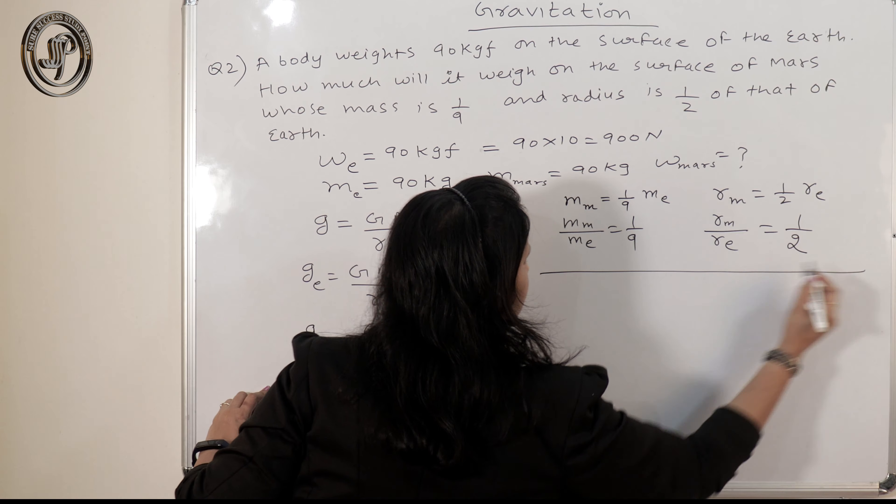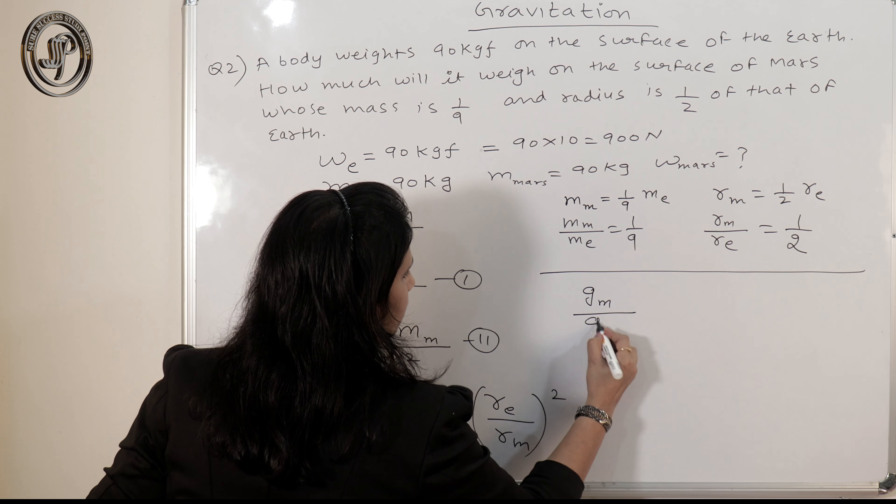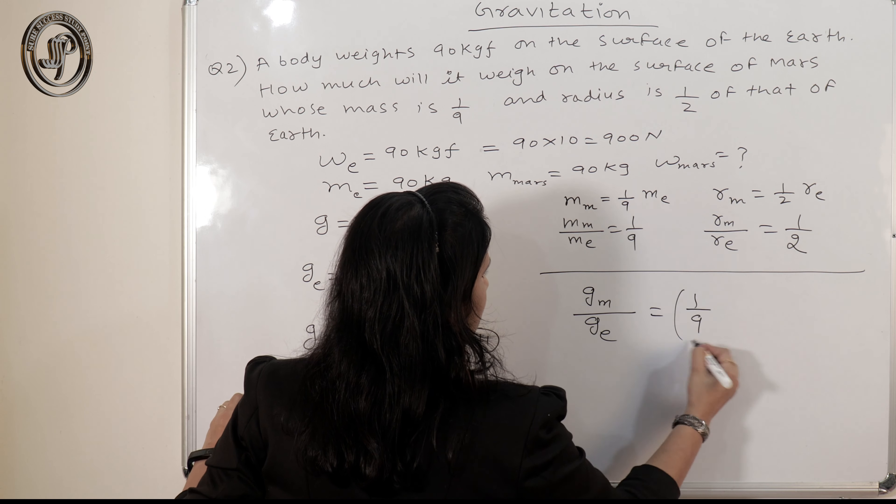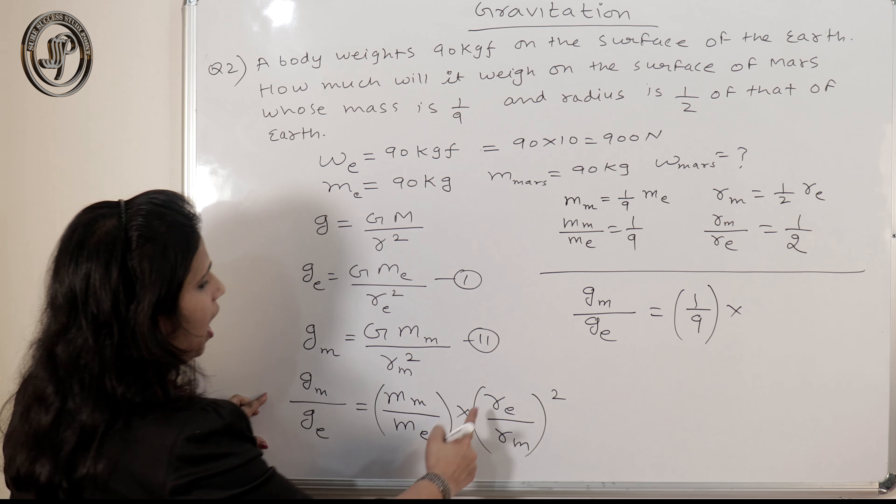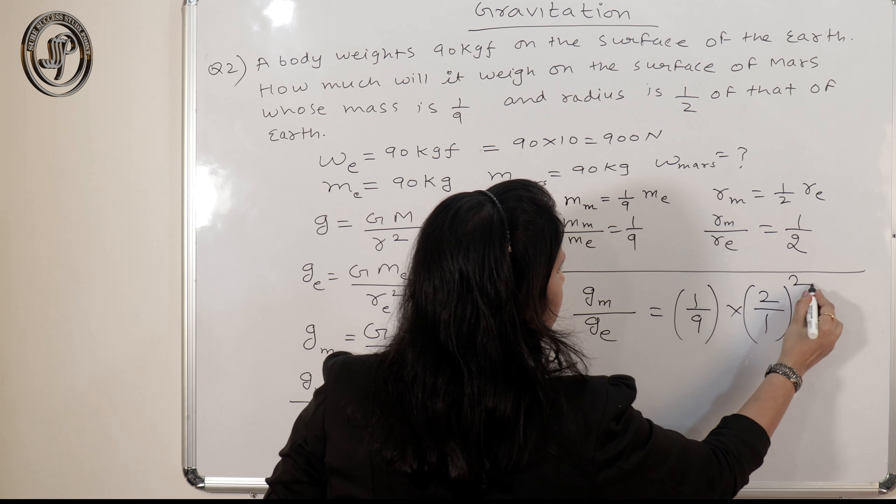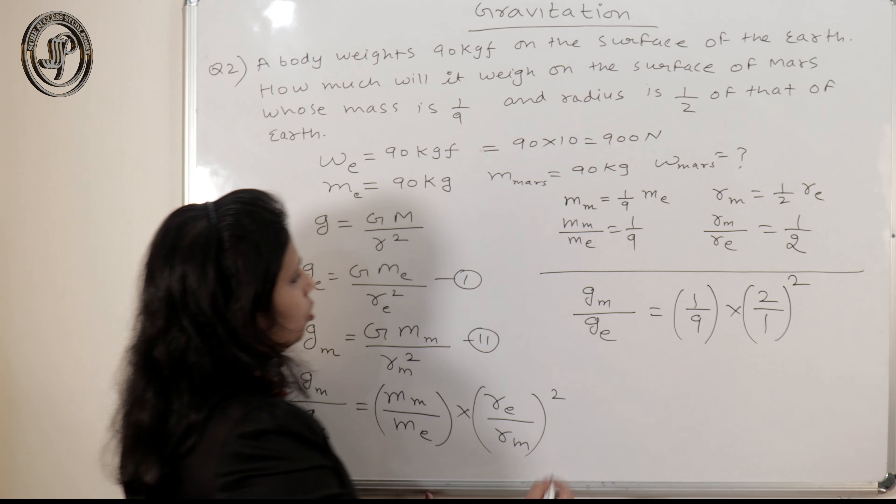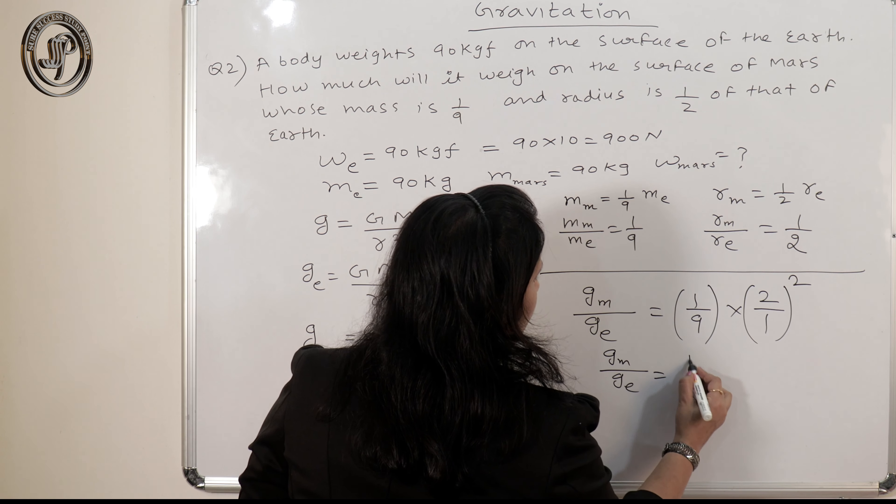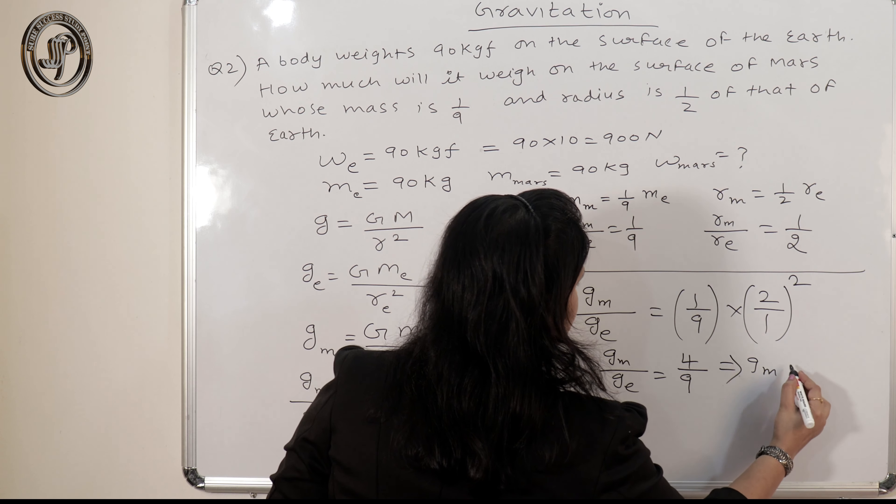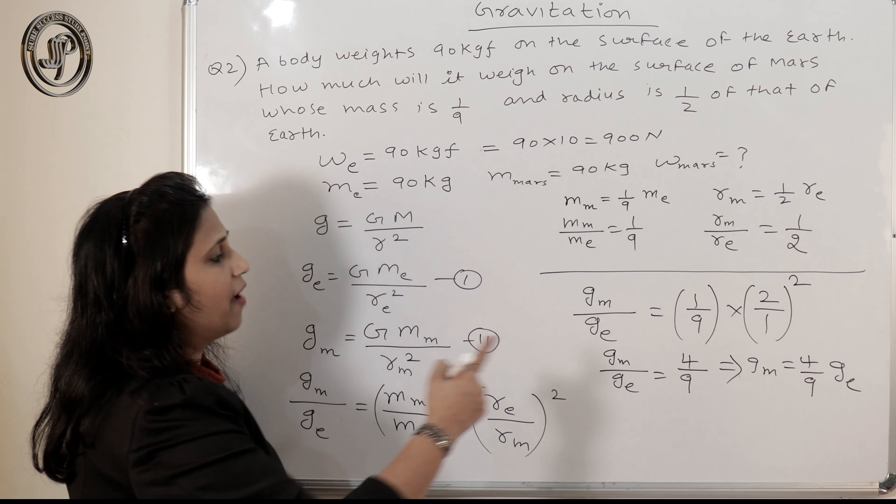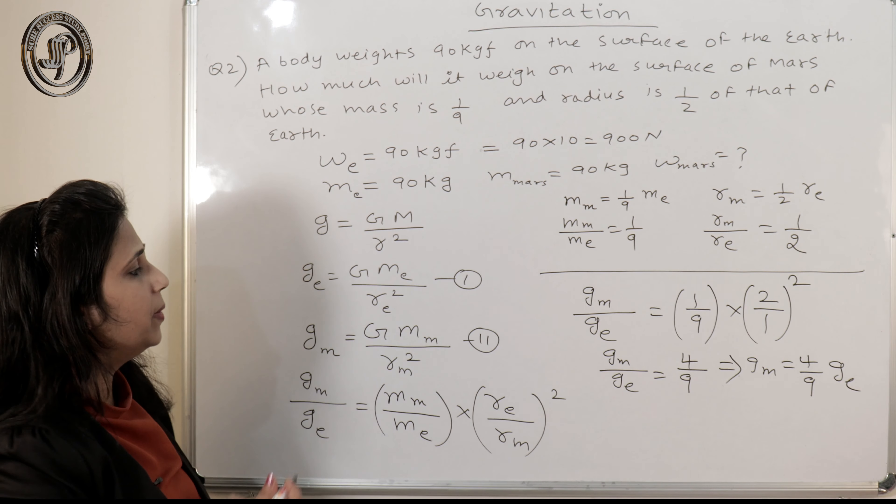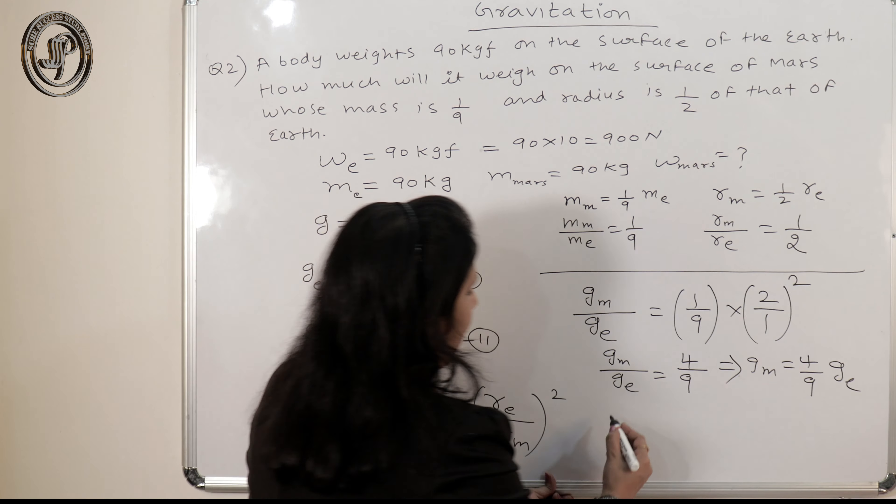Now, if we use each ratio in this equation, what will I get? Yes, tell me? M_m upon M_e is how much? 1 by 9th. And r_e by r_m is how much? Sorry, r_m by r_e is 1 by 2, but we need r_e by r_m, so we will get 2 by 1, and this is squared. I have just substituted the value of ratios. So I can say here, g_m will be 4 by 9 of g_e. So I got gravity on Mars, that is 4 by 9 times of gravity on earth.